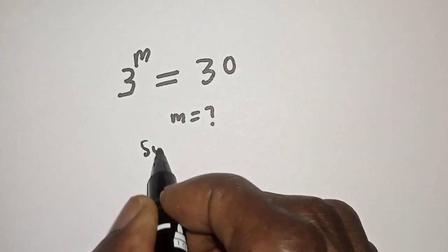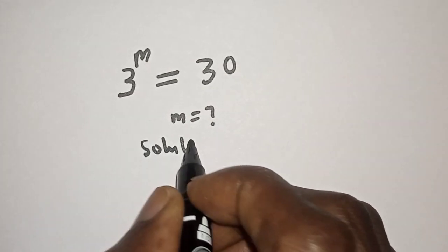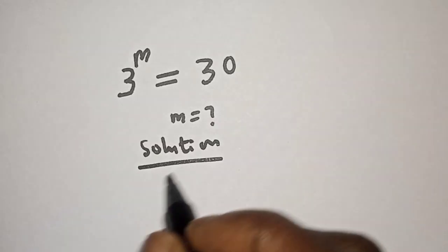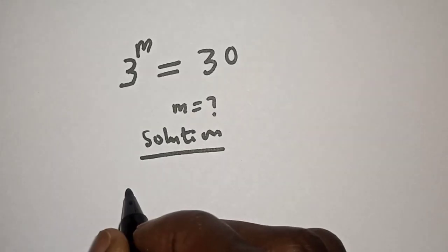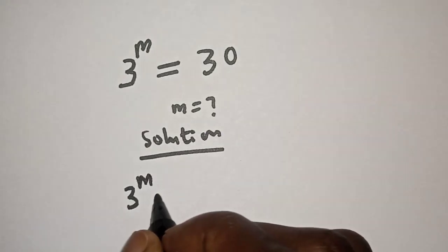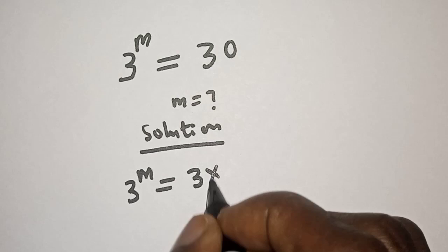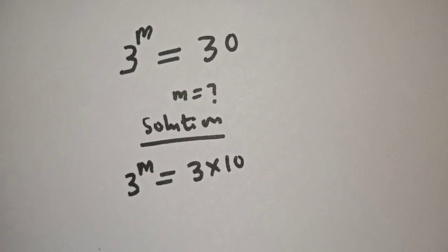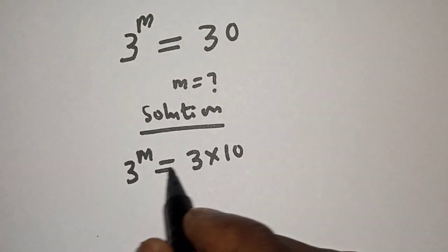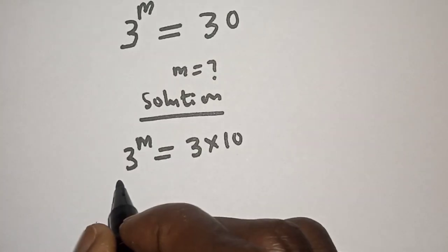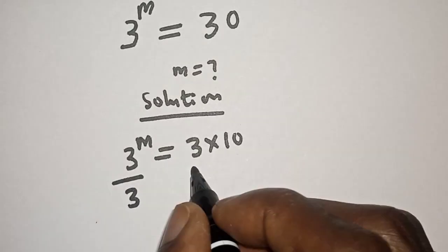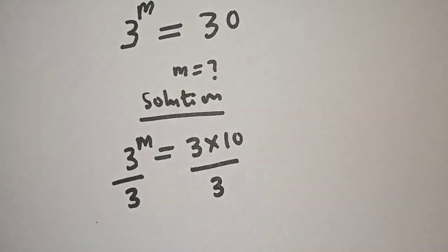Solution. We have 3 raised to power m is equal to 30. It can be written as 3 multiplied by 10. Then let's divide both sides by 3.